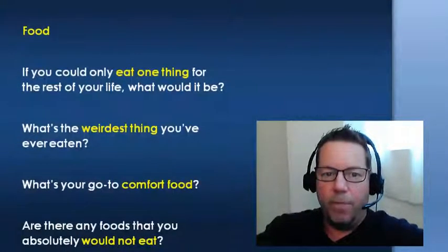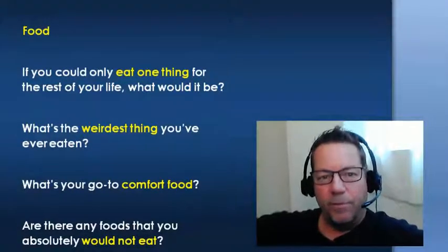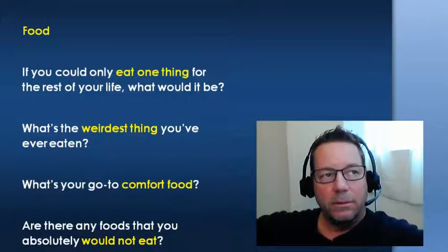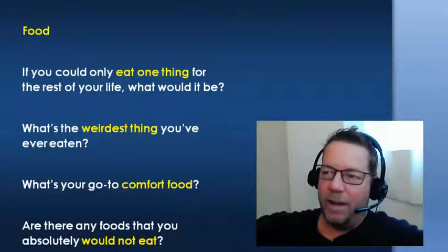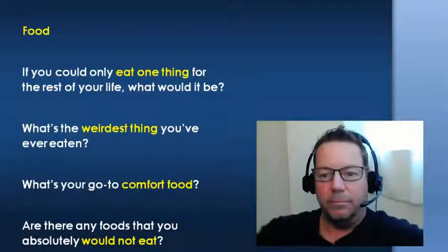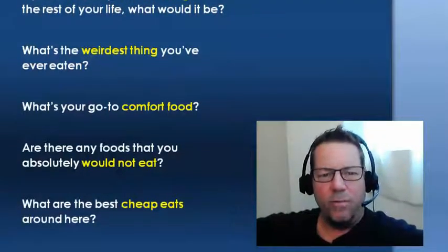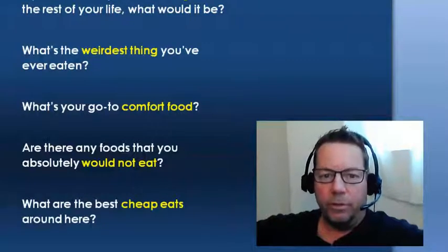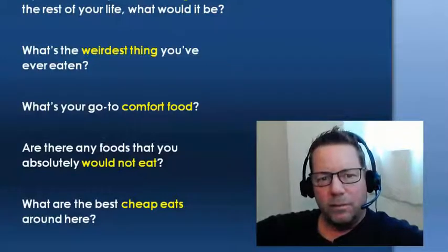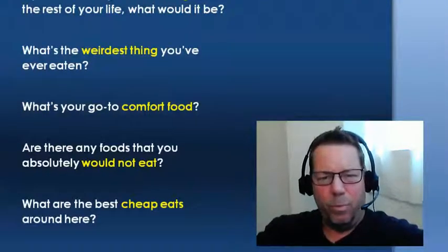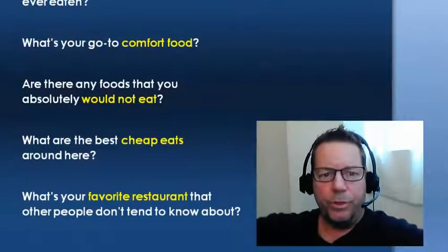Next category is food — everybody likes food, and it's a very safe topic. First question: if you could only eat one thing for the rest of your life, what would it be? That sparks a fun debate. Second: what's the weirdest thing you've ever eaten? When people travel, they try unusual foods — like grilled scorpions in Thailand. Third: what's your go-to comfort food? 'Go-to' means your first choice — food that makes you feel happy and at home.